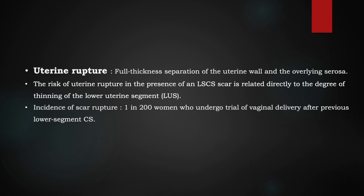What do we mean by uterine rupture? A full thickness separation of the uterine wall and the overlying serosa is called uterine rupture. The risk of this uterine rupture is higher in the presence of an old CS scar. The incidence of scar rupture is considered to be about 1 in 200 women who have had a previous CS and are currently undergoing a trial of vaginal delivery.